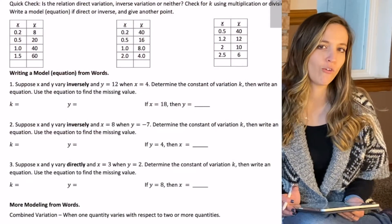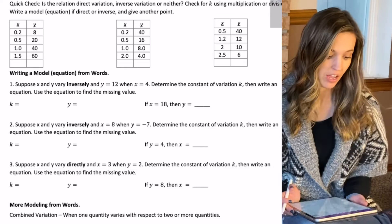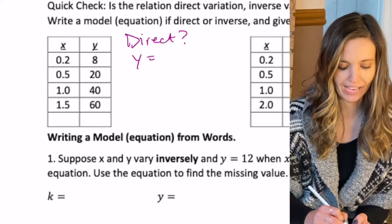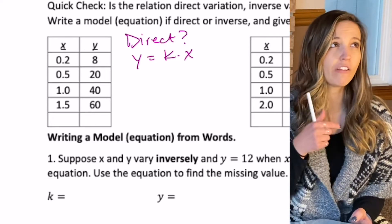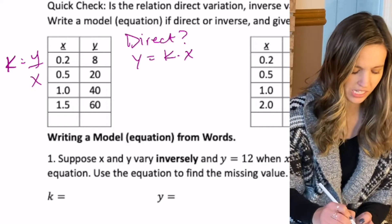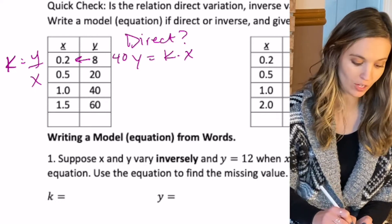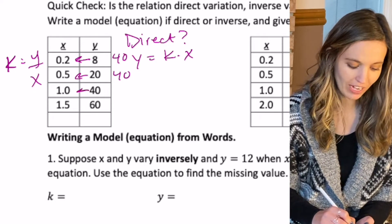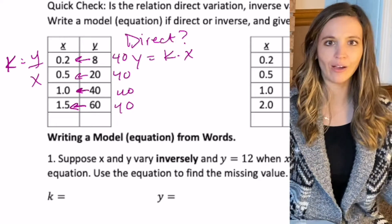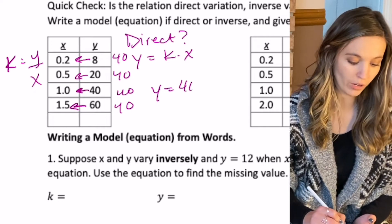Let's determine if these three tables show direct, inverse, or neither, and write an equation. For the first table, I'll check direct variation — k equals y divided by x. So 8 divided by 0.2 is 40, 20 divided by 0.5 is 40, 40 divided by 1 is 40, and 60 divided by 1.5 is 40. We have a constant k of 40, so this is direct variation and the equation is y equals 40x.